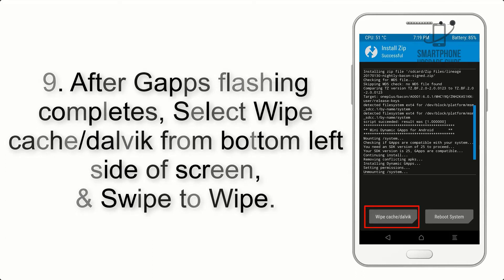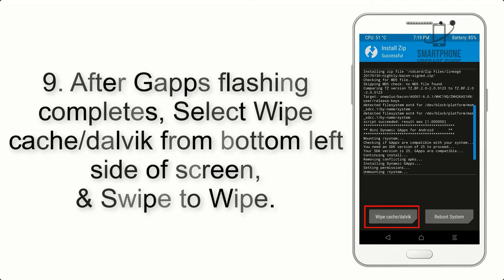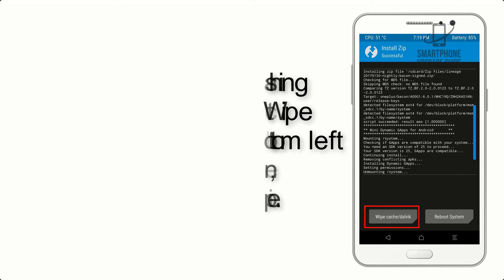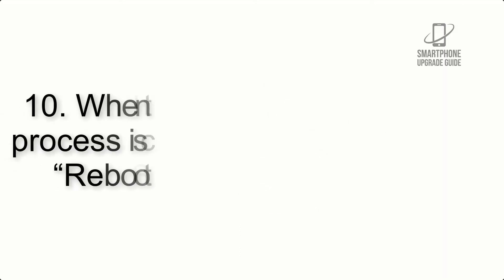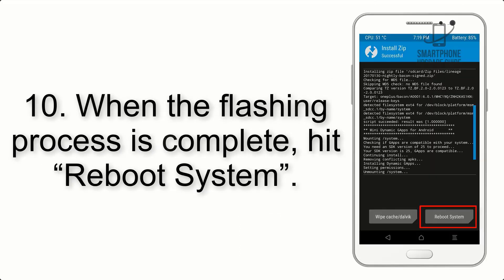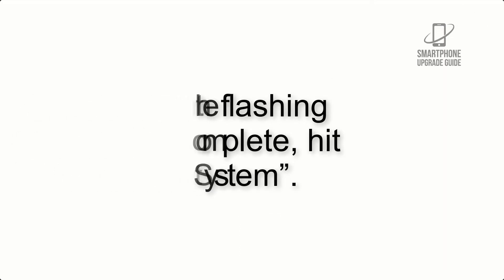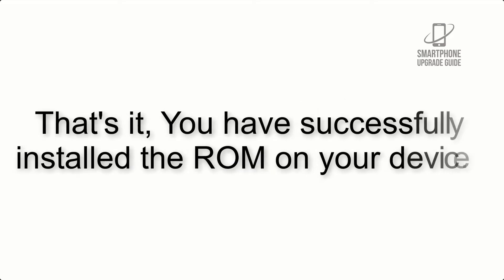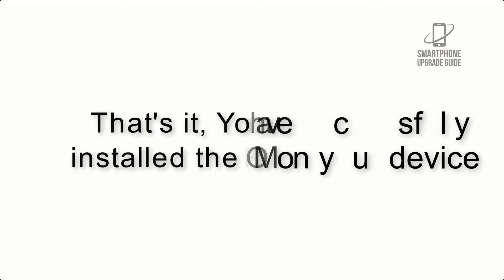Step 8: Flash the GApps zip package in the same manner. Step 9: After GApps flashing completes, select Wipe Cache and Dalvik from the bottom left side of the screen and swipe to wipe. Step 10: When the flashing process is complete, hit Reboot System. That's it — you have successfully installed the ROM on your device.